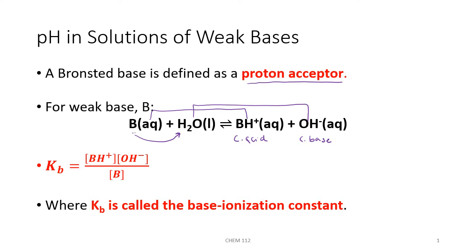When we write our equilibrium expression, we're going to have the concentration of BH+ on the top times the concentration of hydroxide ion, all over the equilibrium concentration of our weak base. Water is not included in the equilibrium expression because it's a pure liquid. What we set our equilibrium expression equal to is called Kb, the base ionization constant. When you look at your chart of acids and bases, you're going to be using values on the base side of the chart.